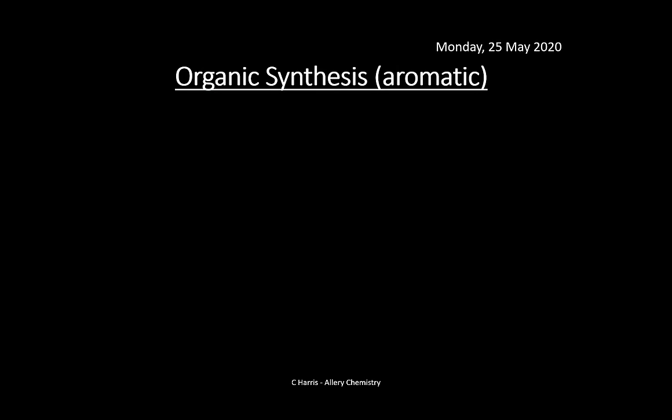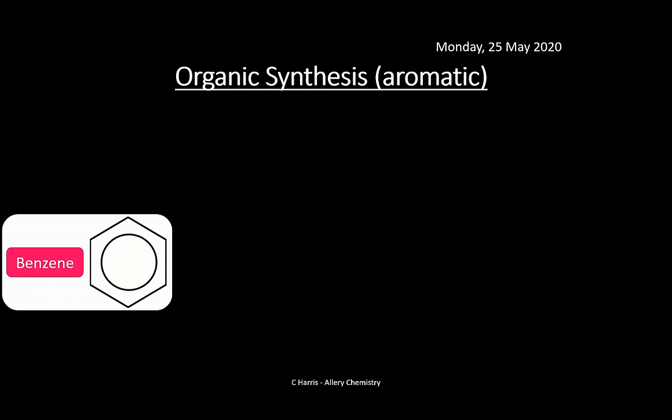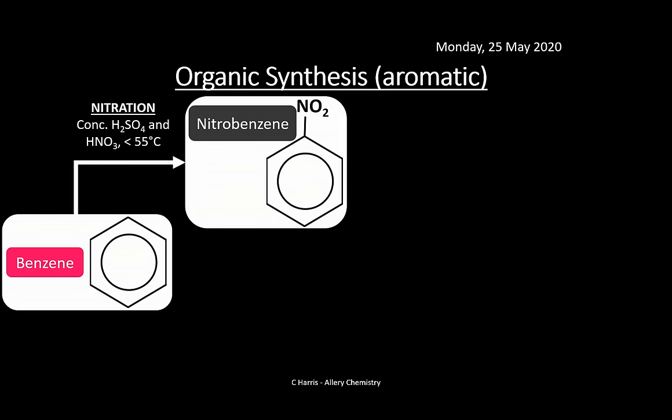Now let's look at aromatic organic synthesis. There aren't as many reactions. Starting with benzene, we add different groups to the benzene ring. Nitration: concentrated sulfuric acid and concentrated nitric acid under 55°C — go above 55° and you get multiple nitration on the benzene ring — giving nitrobenzene.